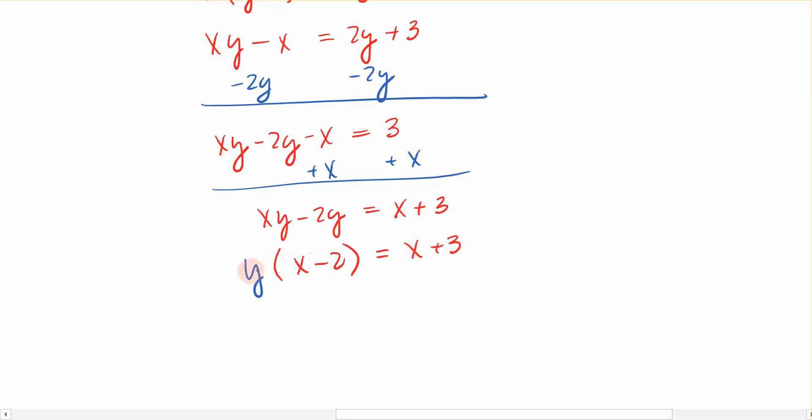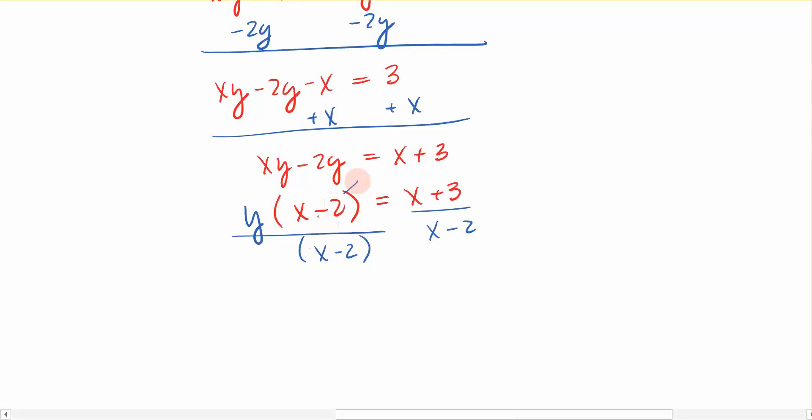And because I now have factors, a y is a factor and x minus 2 is a factor, I can then divide off x minus 2 from the left and x minus 2 on the right. Because this x minus 2 cancels with that x minus 2, and look what it gave me. y is now equal to x plus 3 over x minus 2. All of that algebra to get this y all by itself.